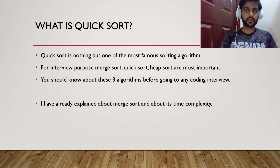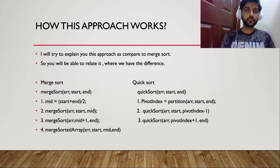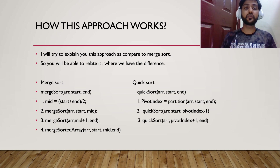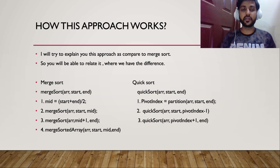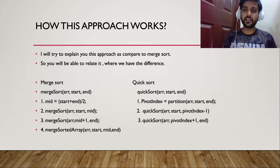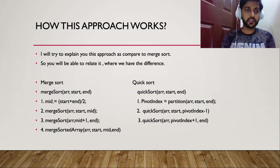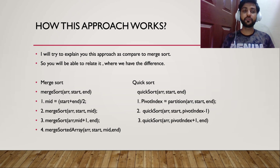Let's jump to the algorithm and see how it works. I'll explain QuickSort by comparing it with MergeSort so you can relate the differences. On the left side we have MergeSort, on the right side QuickSort. In MergeSort, we define a function that takes the array, a starting index, and an end index. Similarly, we create a QuickSort function with the same parameters — array, start index, and end index.